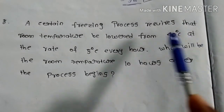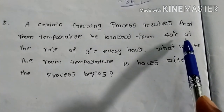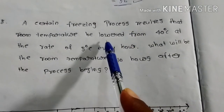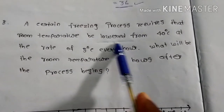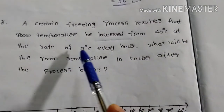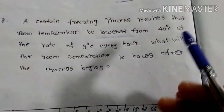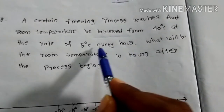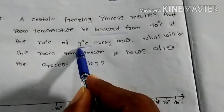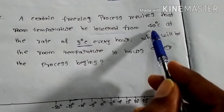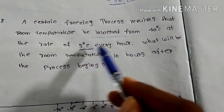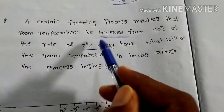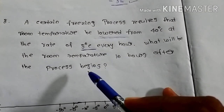Third one: a certain freezing process requires that the room temperature be lowered from 40 degrees at the rate of 5 degrees centigrade per every hour. The present temperature is 40 degrees. Lowered means it decreases. For example, now it is 40 degrees; after 1 hour it will be 40 minus 5 equals 35 degrees; after another hour 35 minus 5 equals 30 degrees. First understand the question, then analyze it, then start the problem.